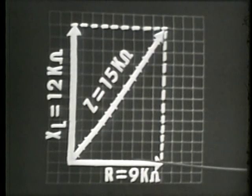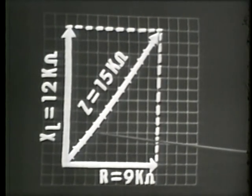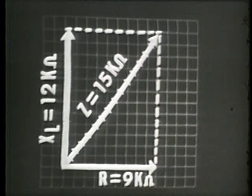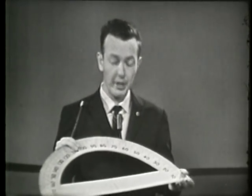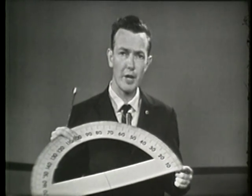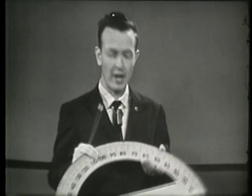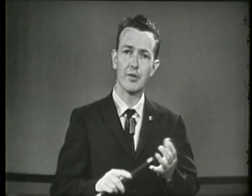You'll notice an angle is generated between the impedance and the resistance vectors. This angle is known as the impedance angle. In an inductive circuit, the impedance angle is positive, which tells us the impedance vector lies in a counterclockwise or positive direction from the resistance vector. If we had a protractor, we could measure the degrees in that angle. Being an inductive circuit, the impedance angle will be somewhere between zero and ninety degrees — in our case approximately 53 degrees, or positive 53 degrees.